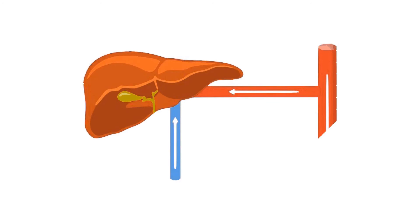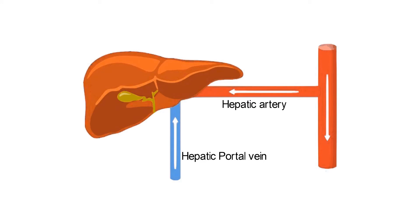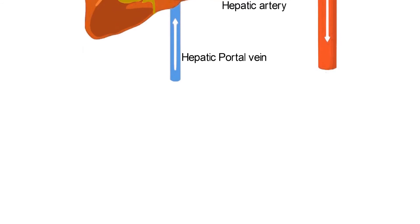This arrangement allows for the cells of the liver, known as hepatocytes, to receive the biomolecules they require from the hepatic portal vein, while also receiving the oxygen and nutrients they need from the hepatic artery.